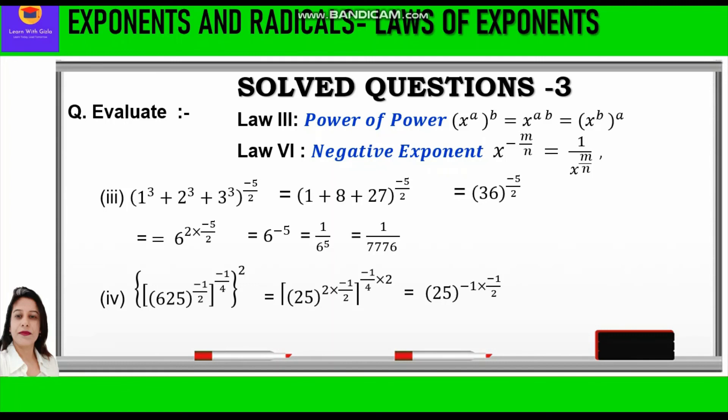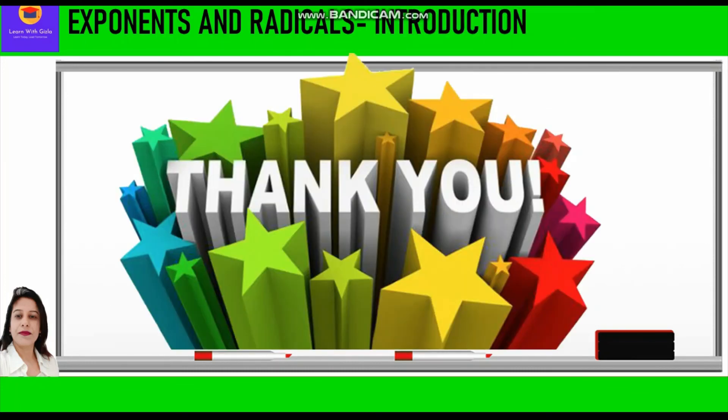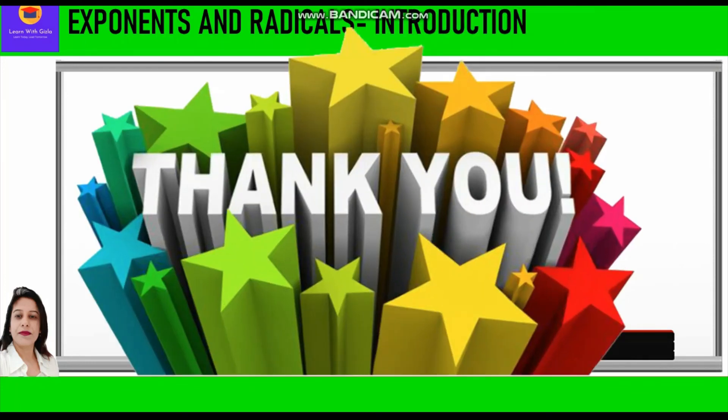We get minus 1 into minus half: 25 raised to power minus 1 into minus half. Now 25 can be written as 5 squared, and minus 1 into minus half is half. So we write 5 squared into half, and 2 and 2 further cancel. We get 5 as the answer. So I hope you have understood these questions related to laws of exponents.